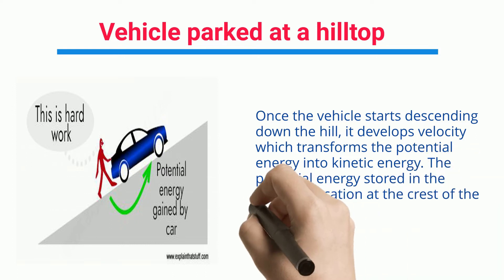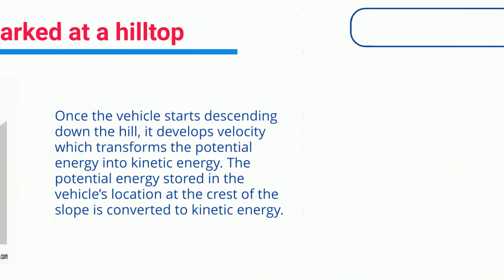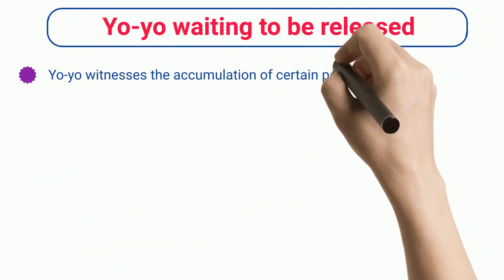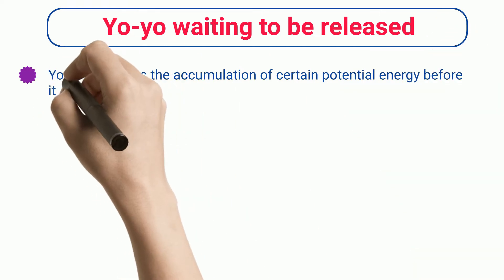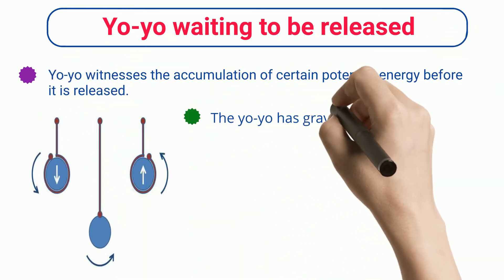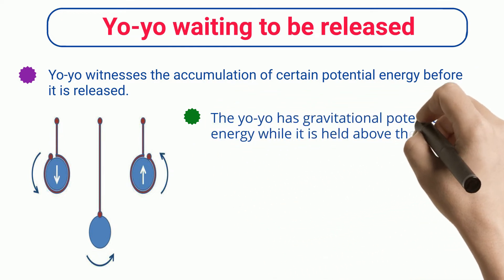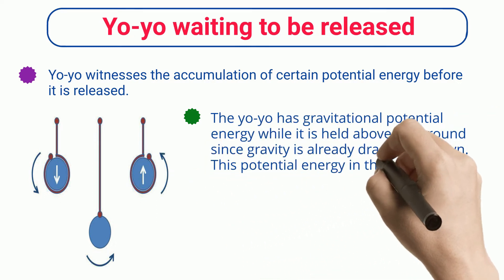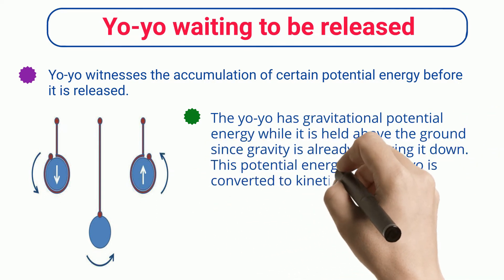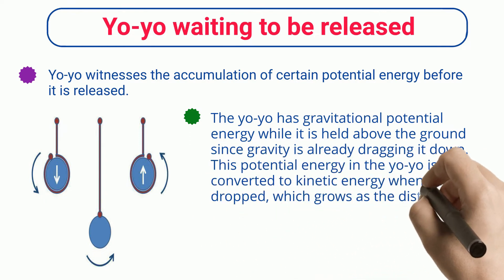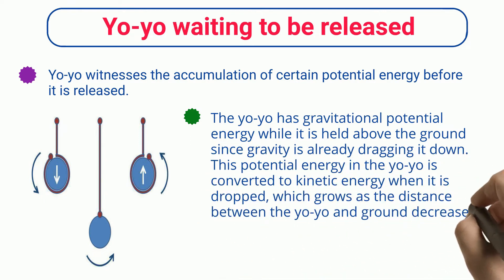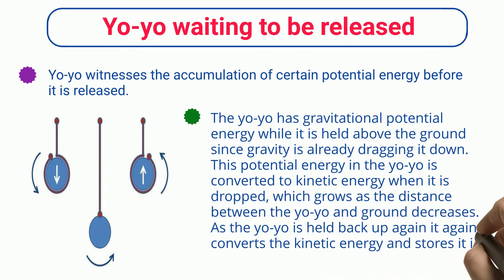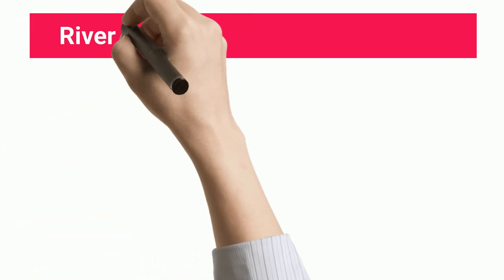Once the vehicle starts descending down the hill, it develops velocity which transforms the potential energy into kinetic energy. Similarly, a yo-yo accumulates gravitational potential energy before it is released. When dropped, this potential energy is converted to kinetic energy, which grows as the distance between the yo-yo and the ground decreases. As the yo-yo is held back up again, it converts the kinetic energy back into potential energy.